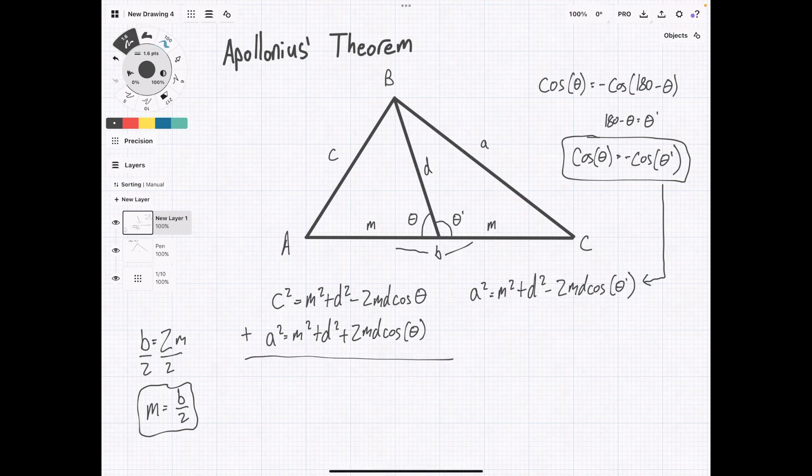So immediately you'll see that these two things cancel out, and we're going to have a squared plus c squared equals 2m squared plus 2d squared.